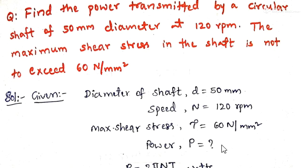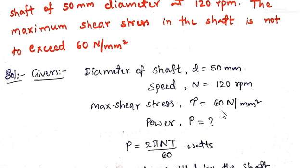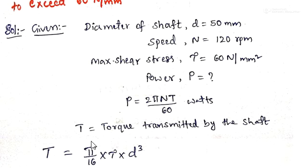We have to find the power transmitted by the shaft. We know that power transmitted by the shaft is given by the formula P = 2πNT/60, where T is the torque transmitted by the shaft.